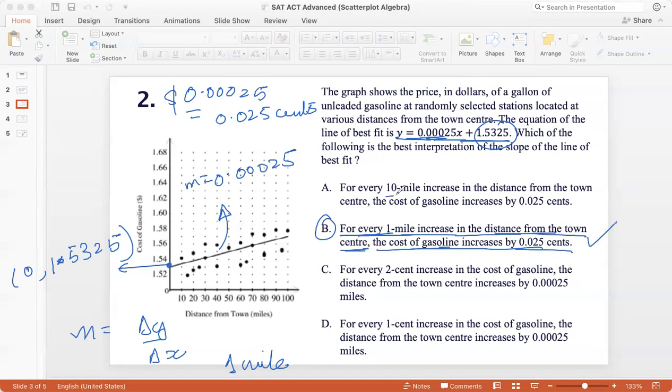Option A, for every 10 mile increase in the distance from the town center, the cost of gasoline, that can't be correct because the slope is defined as change in y for unit, for the change in x by 1 unit, unit change. So it can't be A. For every 2 cent increase, the distance from the town center increases. So this is clearly wrong because it frames it in the wrong units and even D frames it in the wrong units. So the best answer is option B.